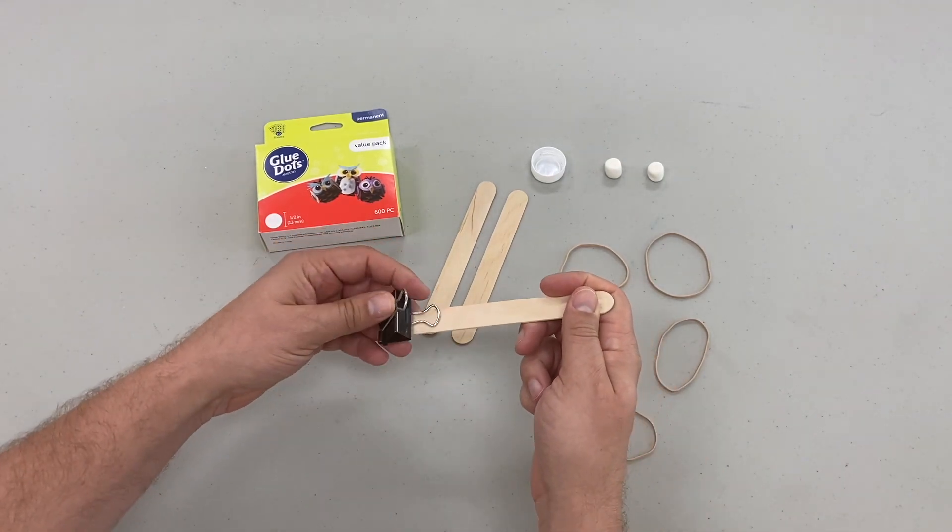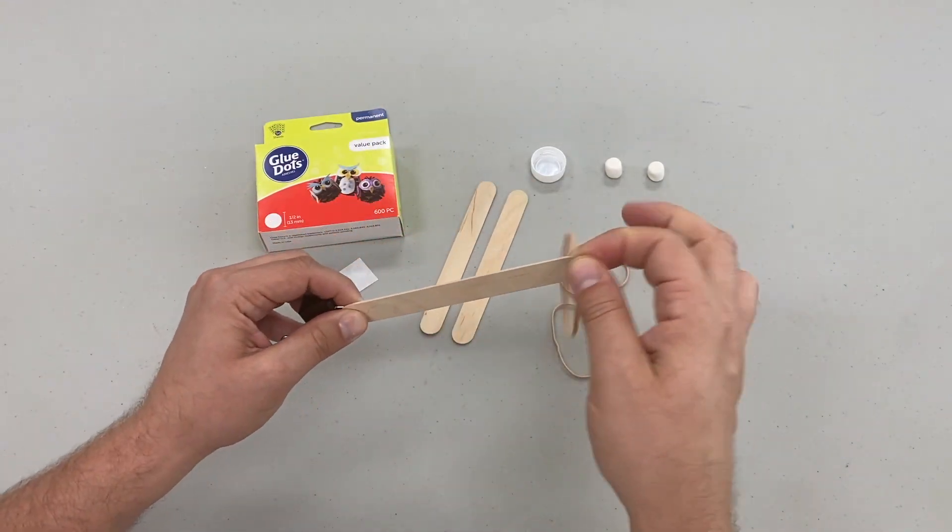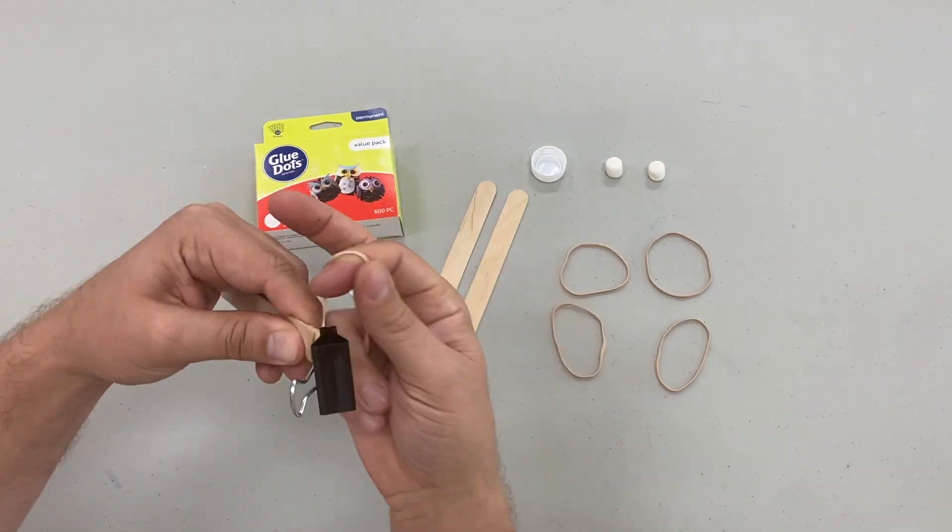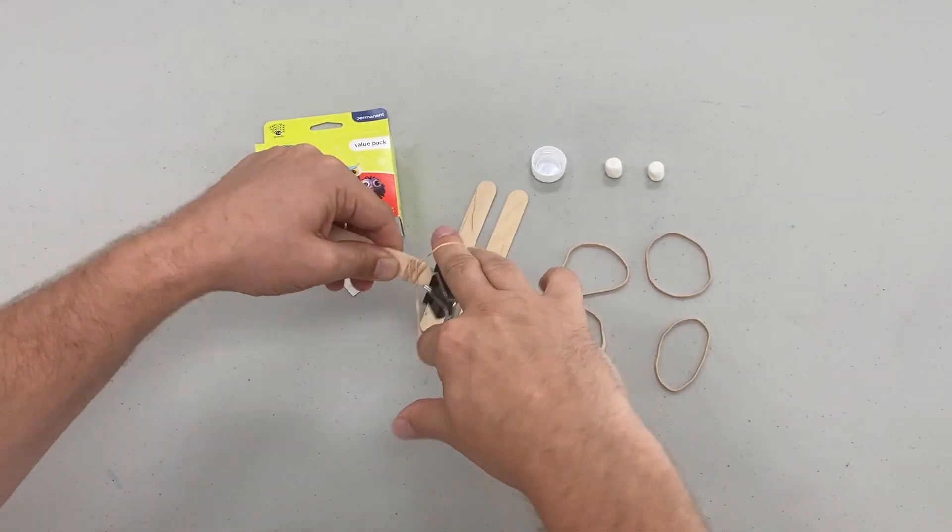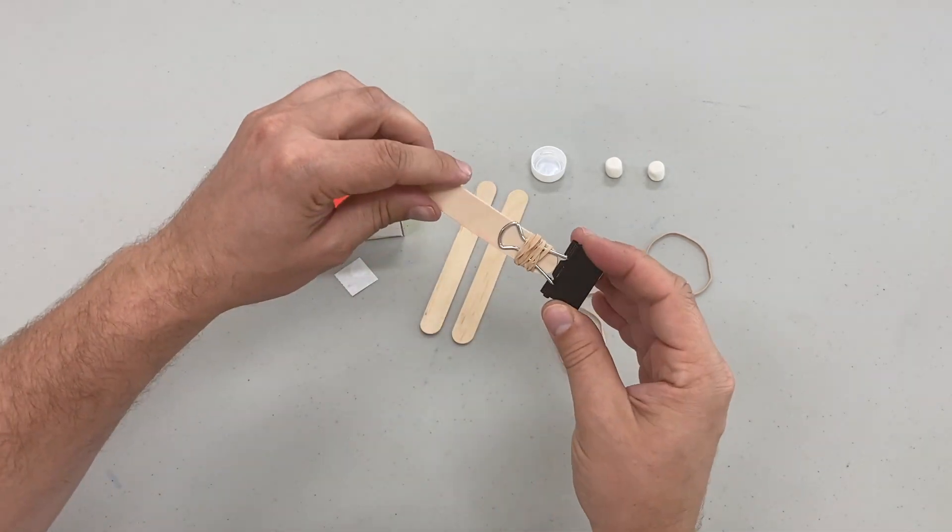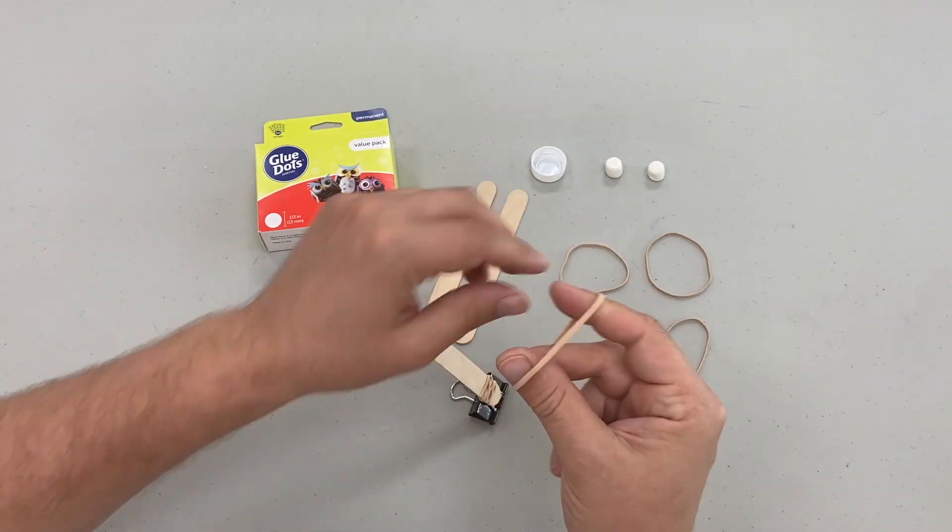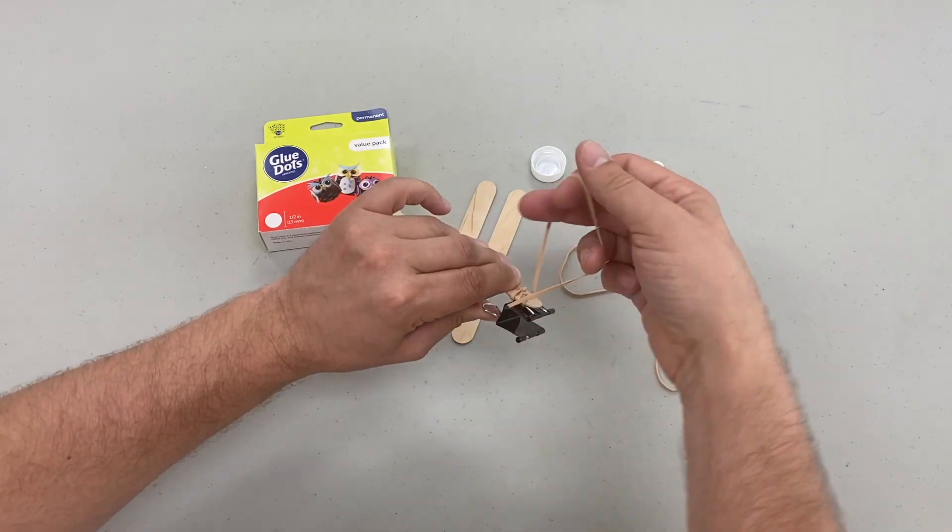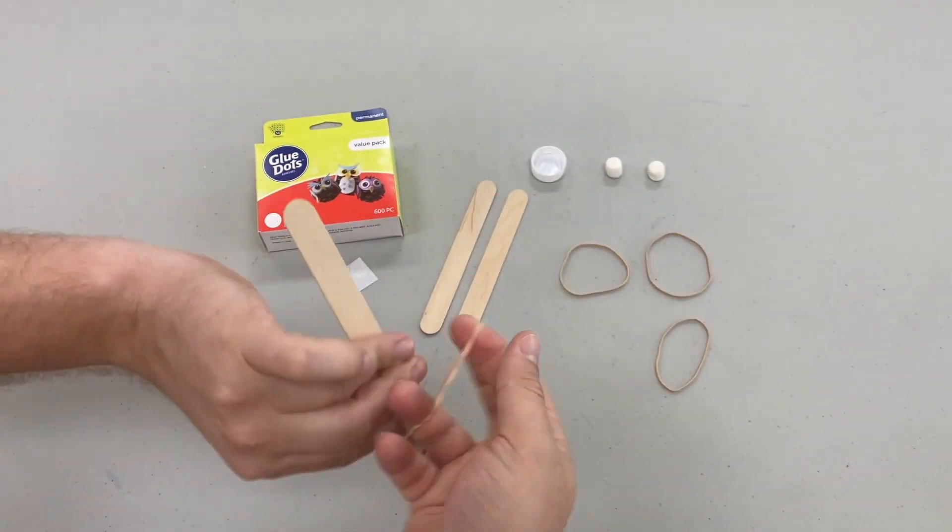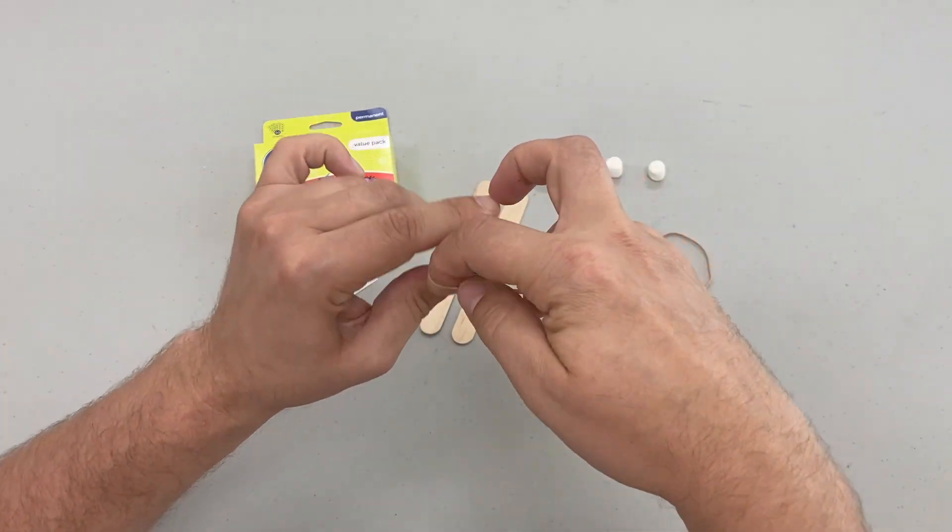To begin we're going to take a craft stick and we are going to attach the binder clip to it. Now I like to open up one of the metal arms of the binder clip and then loop that first around your craft stick. Go ahead and bend that arm back down. Now open up your binder clip and loop a rubber band through the opening of the binder clip. This will make sure that your craft stick does not move and stays attached to the binder clip firmly.